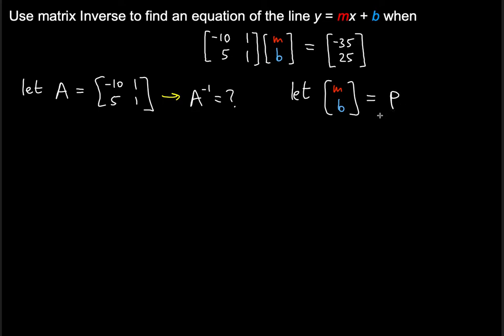We're also going to let negative 35 and 25, the 2 by 1 resulting matrix, let's let that be equal to q. Then what happens is that we will have the product expressed as the matrix A times p equals q, if we substitute in all the vectors here instead of these given matrices.